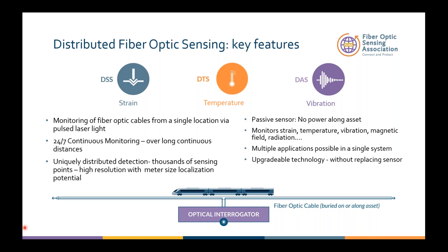What is important in distributed fiber optic sensing is that we have a single fiber interrogated from one position, giving full coverage. It works 24/7, covers long distances — tens to hundreds of kilometers — and has high spatial resolution, the capability to see small events of meter size over long distances. The sensor is passive — just a piece of glass — so you don't need power along the asset. We can measure strain, temperature, vibration, magnetic field, radiation, and more. It's also an upgradable technology: if you upgrade the interrogator, you benefit from the next generation without replacing the fiber.